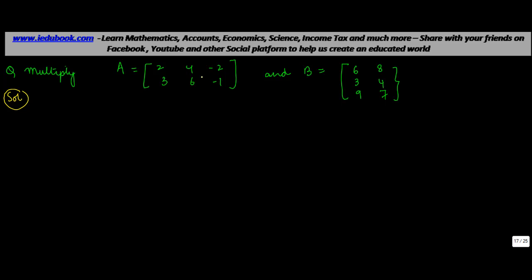Here we have a problem on multiplication of matrices. We are given two matrices A and B and we are asked to multiply these two. The first thing you do is find out the order of matrix A — that is 2 by 3, there are two rows and three columns. Similarly for B, there are three rows and two columns.